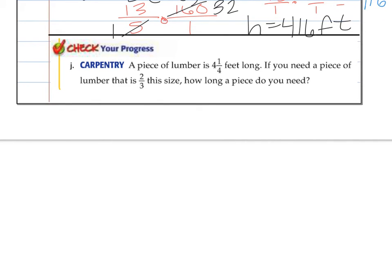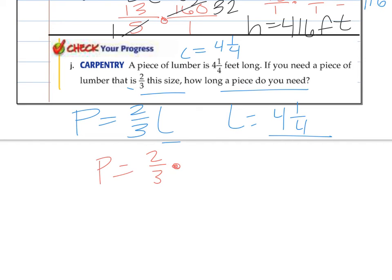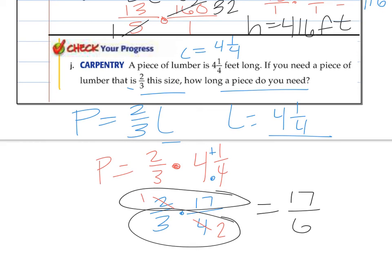How about this next one? A piece of lumber is 4 and 1 fourth feet long. If you need a piece of lumber that is 2 thirds the size, how long of a piece do you need? So we need a piece that is 2 thirds of the lumber we have, and the lumber we have is 4 and 1 fourth. So replace L with L. So the piece of lumber we need is 2 thirds as much or multiplied of 4 and 1 fourth. Switch to an improper. 2 thirds times 17 fourths, 4 times 4 plus 1. Cross cancel. 2 goes into 2 once. 2 goes into 4 twice. Multiply across 17 over 6. Simplify. 6 goes into 17 two times with 5 of the 6 remaining. So our answer is 2 and 5 sixths feet.